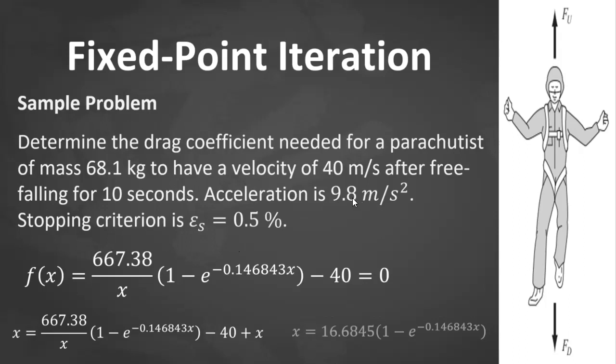Sample problem: Determine the drag coefficient needed for a parachutist of mass 68.1 kilograms to have a velocity of 40 meters per second after free falling for 10 seconds. Acceleration is 9.8 meters per second squared. Stopping criterion is 0.5 percent. This is the equation from the previous lecture. Now we can manipulate this f(x), 667.38 over x times the expression, minus 40 = 0. The easiest way is to add x at both sides, so we have it like this.